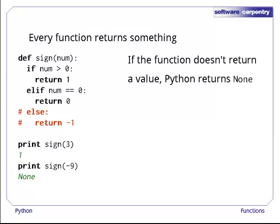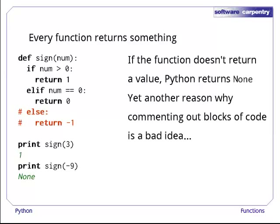Other languages do this differently. In C, for example, trying to assign the result of a function that doesn't return one is a compilation error. The program can't even be run. This kind of behavior is one more reason why commenting out blocks of code is a bad idea. It's all too easy to accidentally get rid of a return statement, after which your function will silently be telling its caller no data.